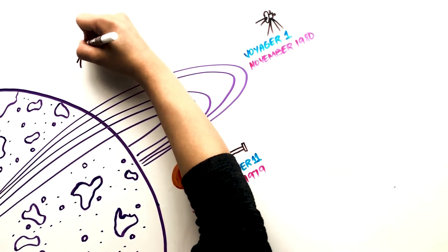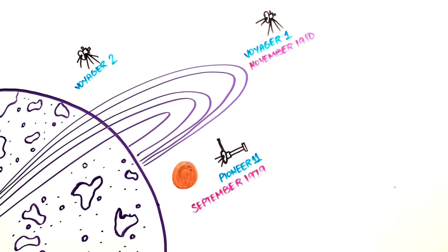Voyager 2 took more close-up images of the planet as well as changes in the rings. Several new moons were discovered and the probe measured Saturn's density and temperature, ranging from negative 203 degrees Celsius to negative 130 degrees Celsius.